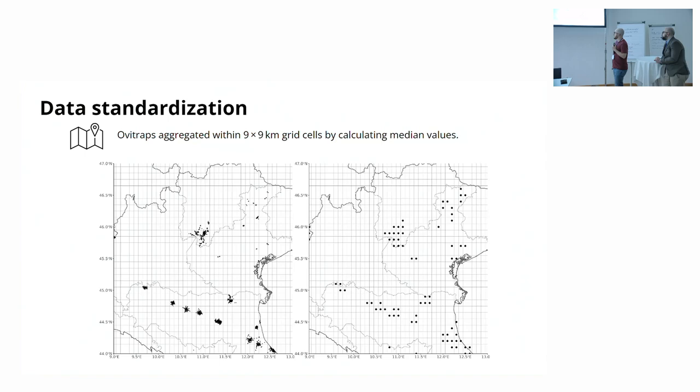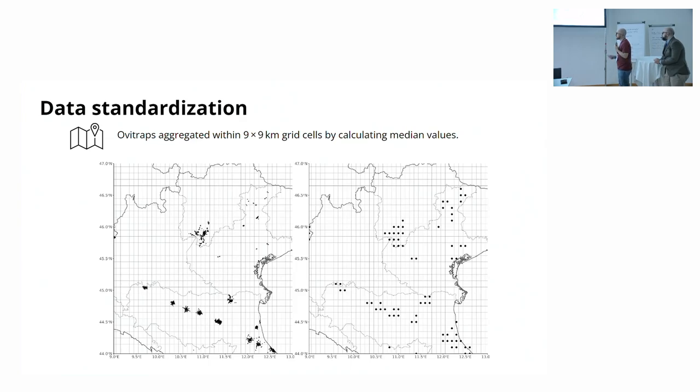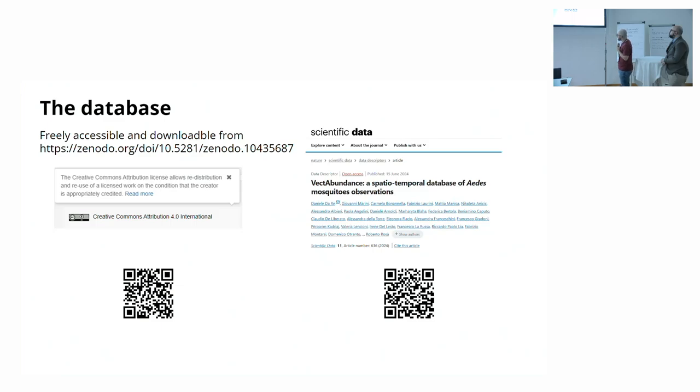Finally, we did all this procedure of disaggregation, temporal disaggregation, on each of the traps. But then there was quite a lot of environmental heterogeneity, microclimatic effects, and so on. We decided to do a crude spatial average using a grid of 10 kilometers. Why 10 kilometers? Because it's the native spatial resolution of ERA 5 land dataset, which was very handy then to inform the model. We got 150 aggregated ovitraps covering the whole area, with 42,000 observations. We kept all the information that we could, and we published a paper on scientific data a couple of months ago.